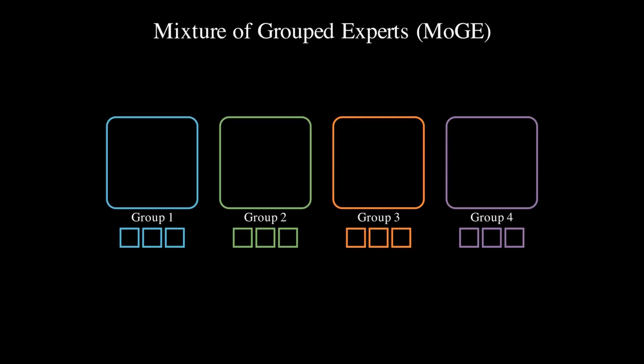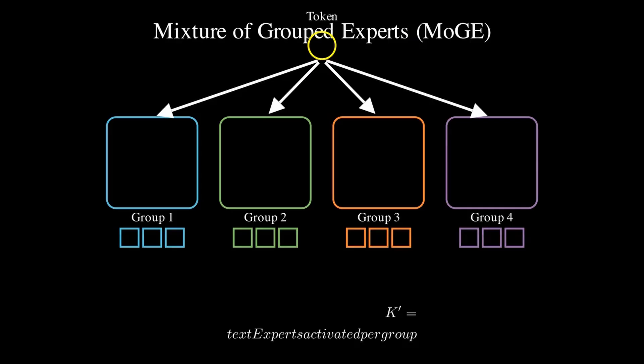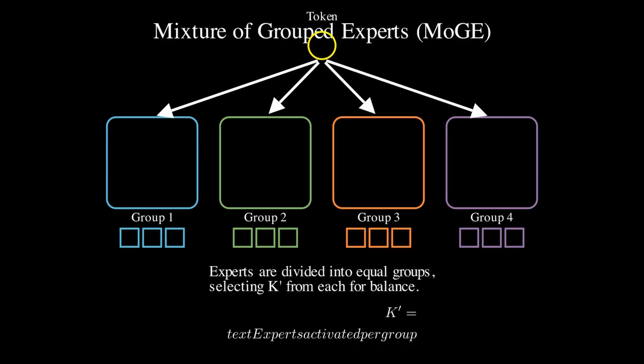They've built PanGu Pro MoE based on this architecture. The way it works is: for each token, an expert has to be selected. Instead of selecting freely, the experts are divided into equal groups and one expert is chosen from each group. So if you have, say, 24 million active parameters, they create groups of experts and select from each group, keeping the load balanced. Each group has an identical number of activated experts.